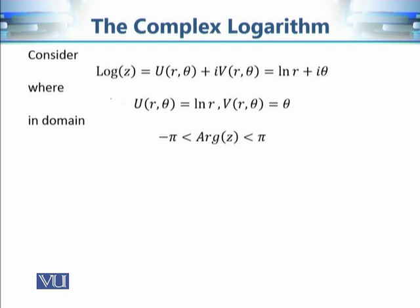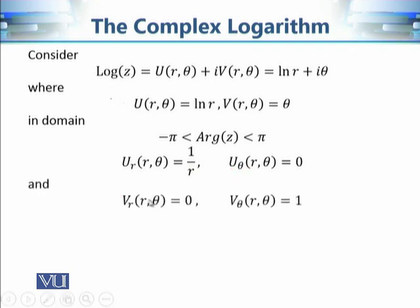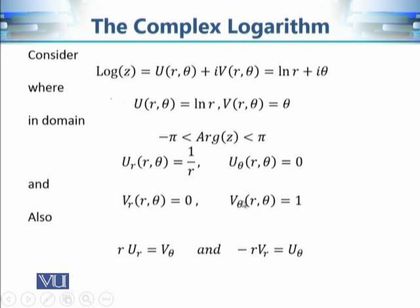In this case u and v are very simple functions. We have u(r,θ) = log(r) and v(r,θ) = θ. The partial derivative of u with respect to r is 1/r, and with respect to θ is 0. The partial derivative of v with respect to r is 0, and with respect to θ is 1. Using these values we can verify that they satisfy the Cauchy-Riemann equations: r·u_r = 1 = v_θ, and −r·v_r = 0 = u_θ.